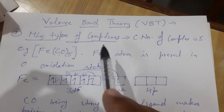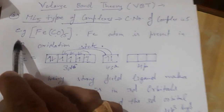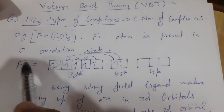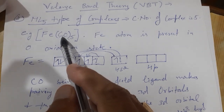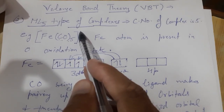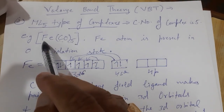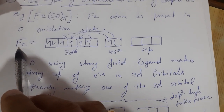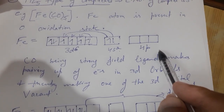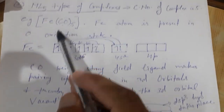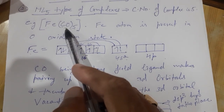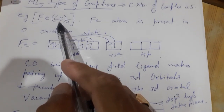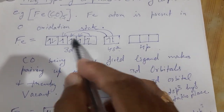To recap: today we discussed ML5 type of complexes with coordination number 5. The example is pentacarbonyl iron, in which iron is in zero oxidation state because CO is a neutral ligand and the complex has no charge — so X + 5×0 = 0. The electronic configuration of Fe(0) is 3D6, 4S2, 4P0. CO is one of the strong field ligands, which always cause pairing up of electrons in 3D orbitals.